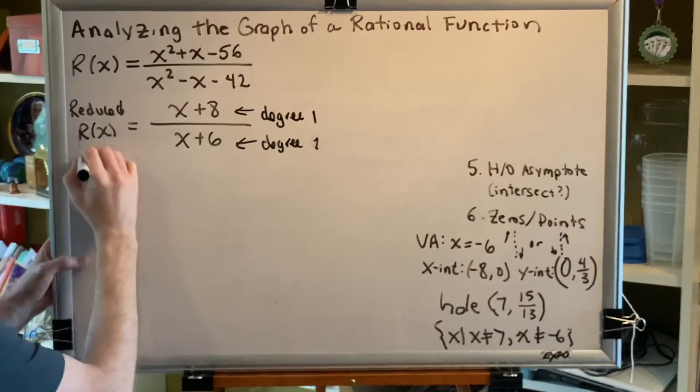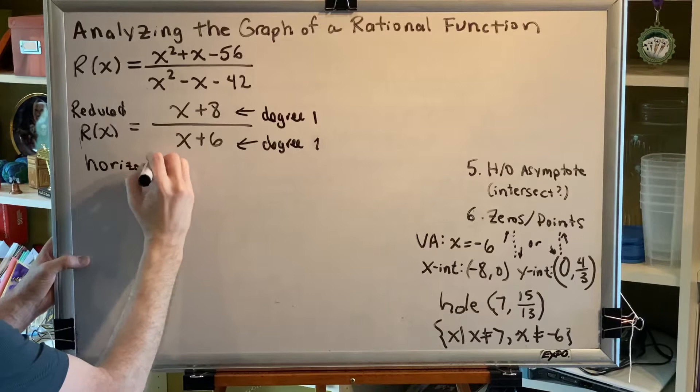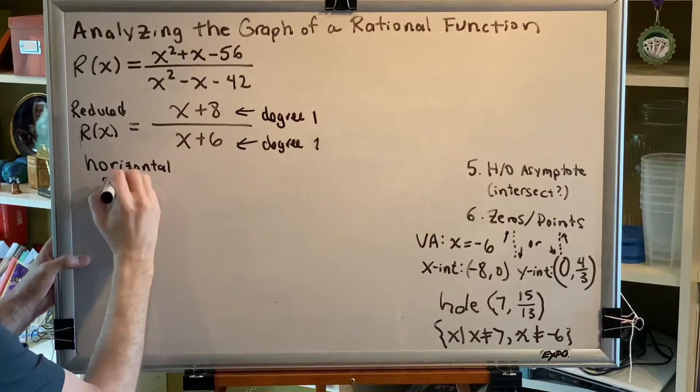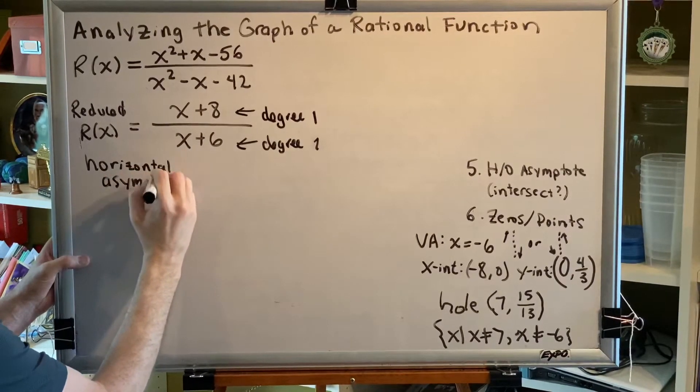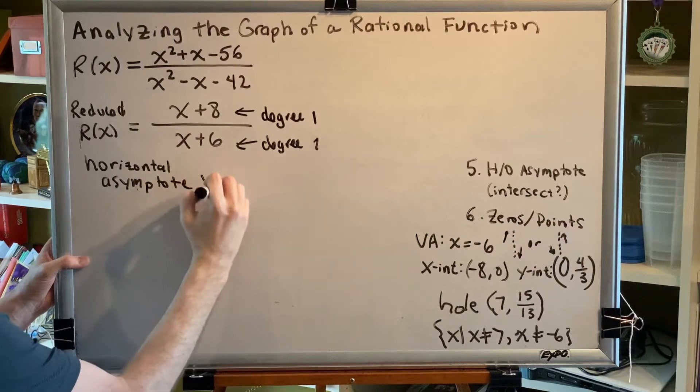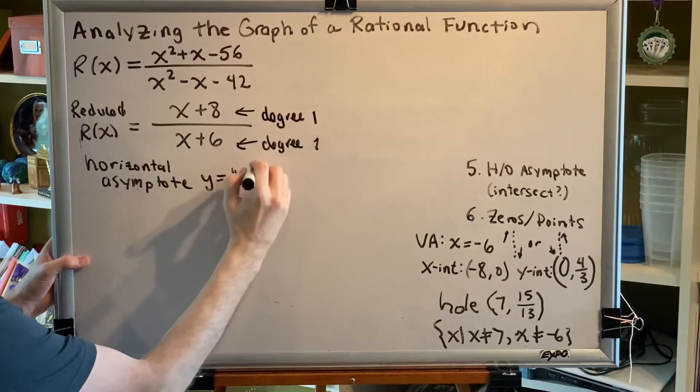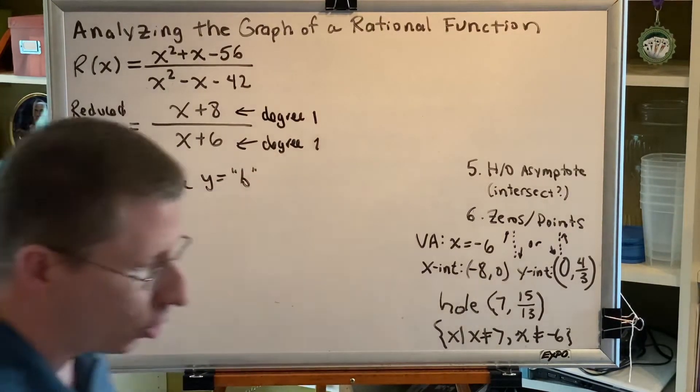Therefore, we are going to have a horizontal asymptote, and its equation will be y equals b, where b is the ratio of the highest degree term coefficients.